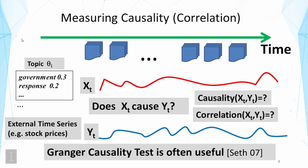A commonly used measure for causality here is the Granger causality test. The idea is simple: build an auto-regressive model using the history of Y to predict itself — that's the best we can do without other information. Then add history information of X and see if it improves prediction of Y. If the improvement is statistically significant, we say X has causal influence on Y; otherwise, X does not have a causal relation with Y. You can read the cited reference for more details — it's a frequently used measure with many applications.